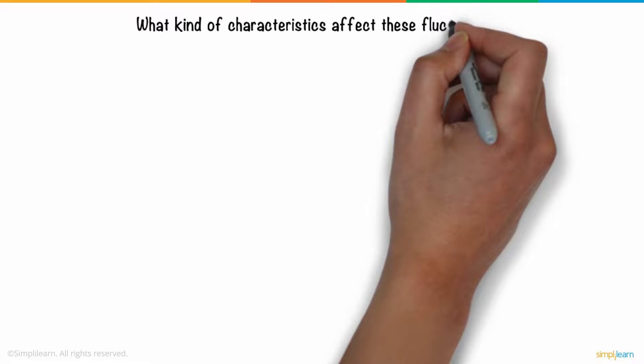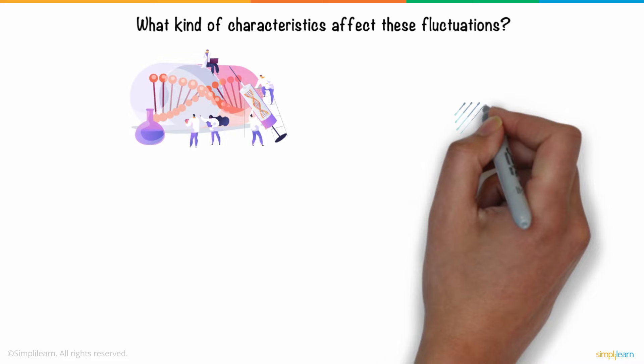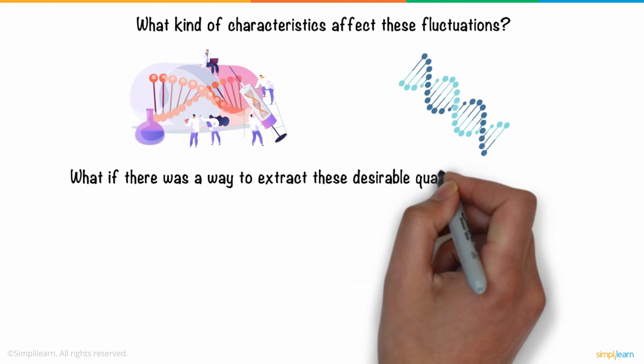Most of these characteristics come from the organism's genes, or their DNA structure, to be specific. What if there was a way to extract these desirable qualities from their genes and give them to other organisms to spread these characteristics?